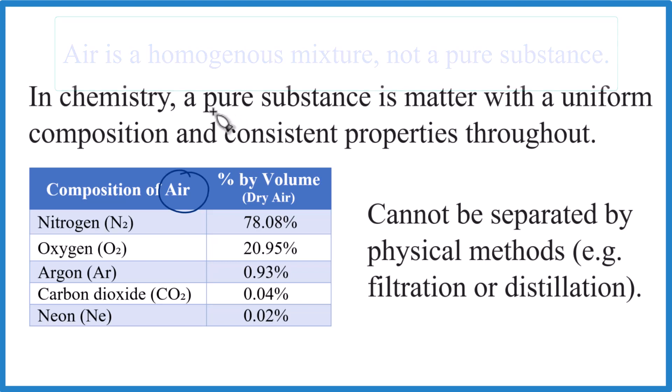So in chemistry, a pure substance has a uniform composition and consistent properties throughout. And that's true for air. It's uniform. It's the same if you have a sample throughout, and it would have the same properties as well, such as density or color or conductivity.